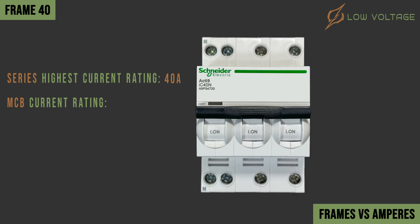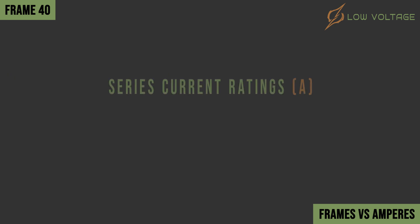In this example, the series code is a designation to identify the type of breaker and frame size. The code indicates that this series has a maximum current rating of 40 amperes, and the rating of this MCB is 20 amperes. Generally speaking, Frame 40 has a current rating between 1 ampere reaching a maximum rating of 40 amperes. Each manufacturer has its own current rating series, so current rating values may vary between them.